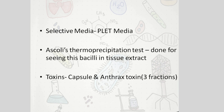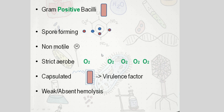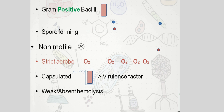The toxins include the capsule, which we already talked about, and the anthrax toxin. It is a gram-positive, spore-forming bacilli. Usually spore-forming bacilli are motile, but this is an exception — it is non-motile and it is a strict aerobe, meaning it needs oxygen. It is capsulated, and that capsule is the virulence factor. It also shows weak or absent hemolysis.